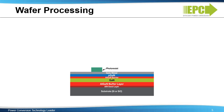Fabricating a high electron mobility transistor, or HEMT, from a heteroepitaxial substrate can be accomplished in a series of steps. One example of a simplified process for making an enhancement mode HEMT with a PGAN gate is shown here. The process steps are as follows.